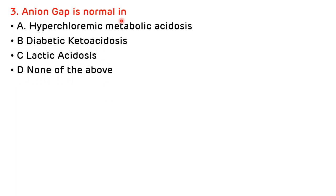Question 3: Anion gap is normal in — A) hyperchloremic metabolic acidosis, B) diabetic ketoacidosis, C) lactic acidosis, D) none of the above. Diabetic ketoacidosis and lactic acidosis are causes of increased anion gap metabolic acidosis. The correct answer is A — hyperchloremic metabolic acidosis — because there is an increase in chloride value.